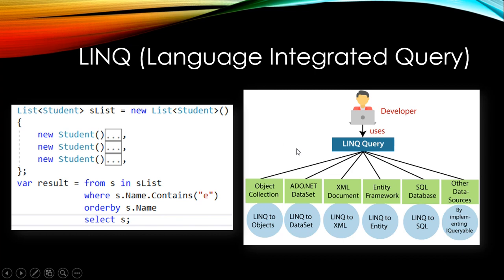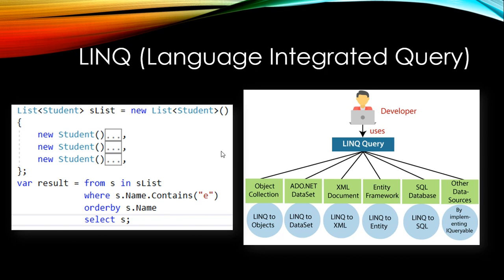LINQ can be applied on almost every type. For example, we can use it with XML documents as a collection of nodes, with Entity Framework, with SQL databases, with any sources such as the file system. The point is that we can use LINQ with any type of collection. The beauty of LINQ is that we use C# syntax to write our queries.